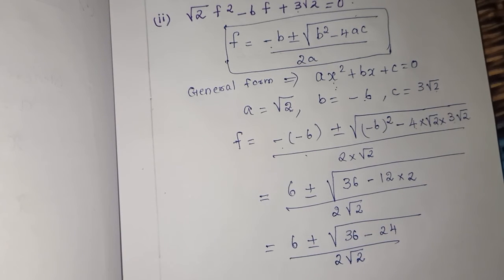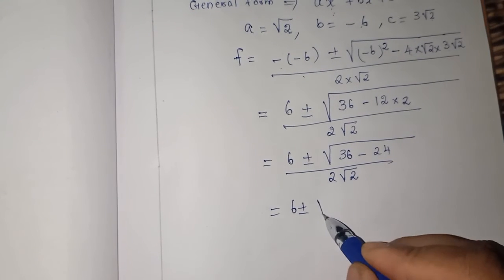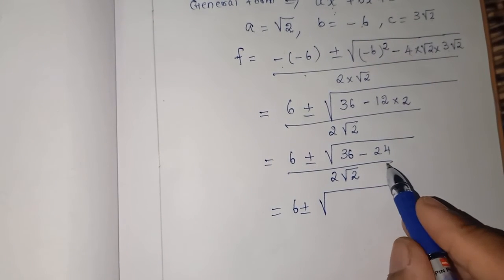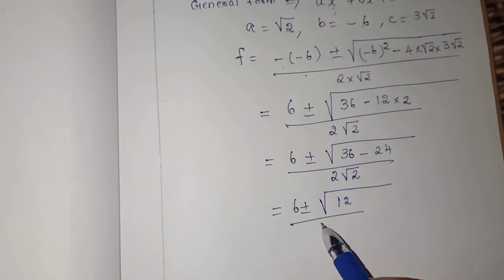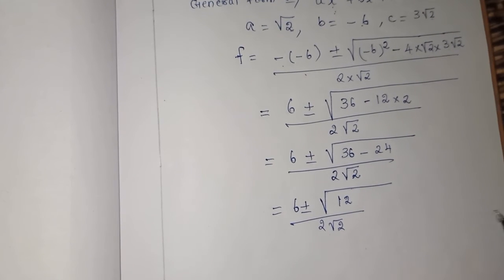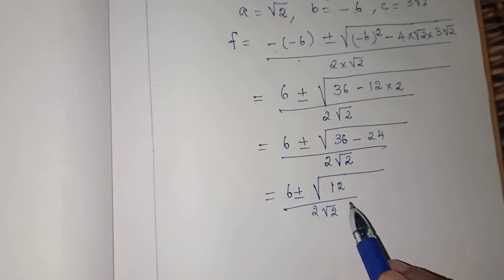Now simplify: 6 ± √(36 - 24) by 2√2. So 6 ± √12 divided by 2√2. We have √12. You have to simplify this √12.